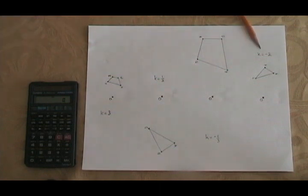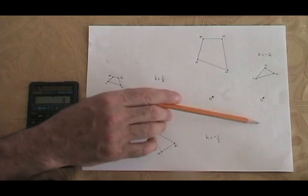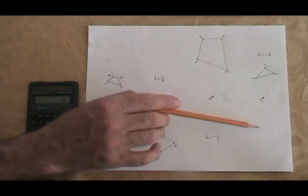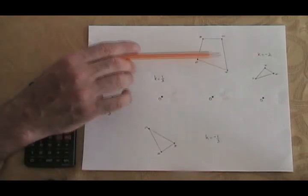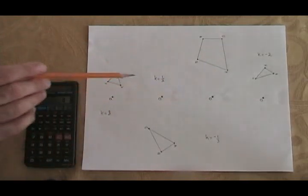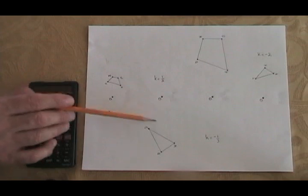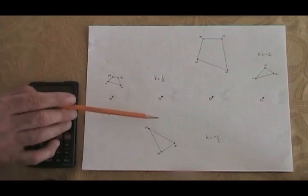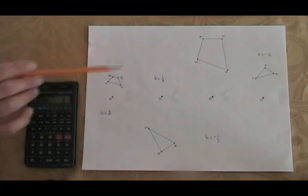Here, k is equal to negative two. What does the k value tell me? The fact that it's negative means that the copy of my shape is going to end up on the other side of the origin from where the original is. In this one, k equals negative one-third, so the copy is going to end up over here, on the other side of the origin. In this one, k equals one-half — it's positive — so the copy is going to land on the same side of the origin as the original. And over here, k equals three, also positive, so the copy is going to land on the same side of the origin.